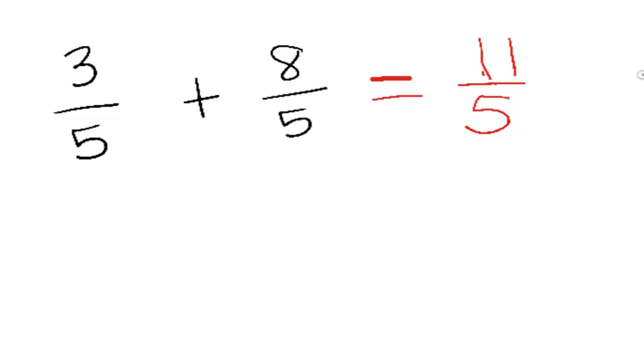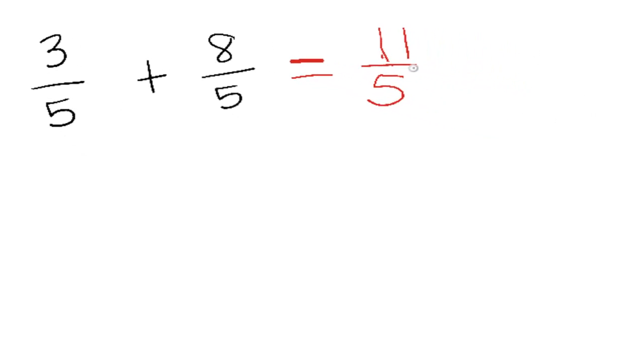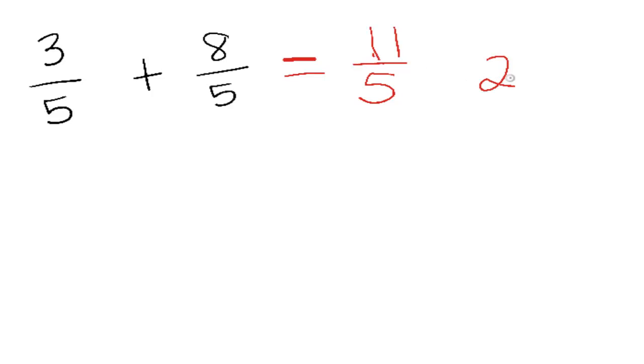If you need your answer to be a mixed number instead of an improper fraction, what you do is you ask yourself how many times does 5 go into 11? 5 goes into 11 2 whole times, but 5 times 2 is only 10. So you have 1 left over out of 5, and your denominator will stay 5. So you can either say your answer is 2 and 1 fifth, or you can say your answer is 11 fifths.